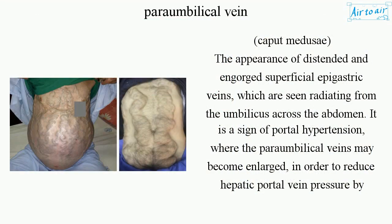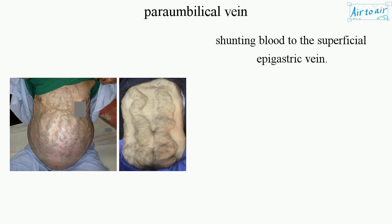Caput Medusae: The appearance of distended and engorged superficial epigastric veins, which are seen radiating from the umbilicus across the abdomen. It is a sign of portal hypertension, where the paraumbilical veins may become enlarged in order to reduce hepatic portal vein pressure by shunting blood to the superficial epigastric vein.